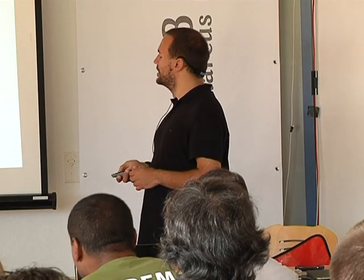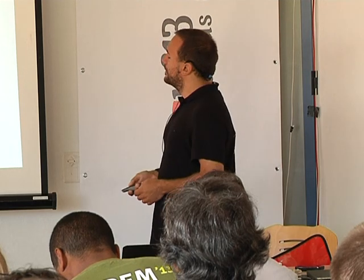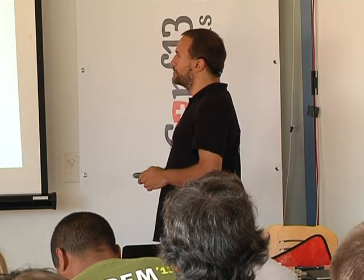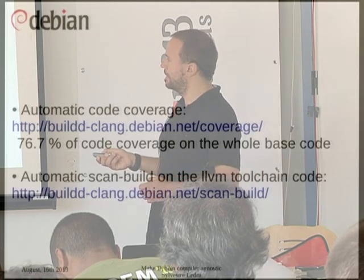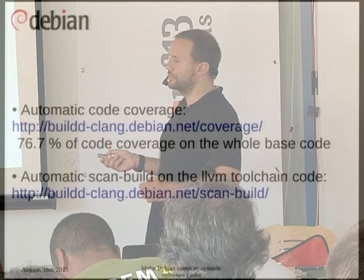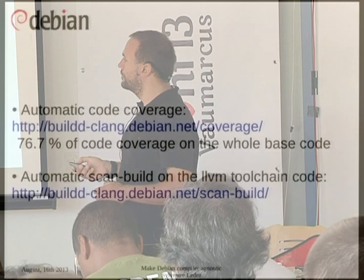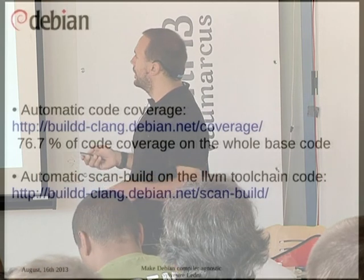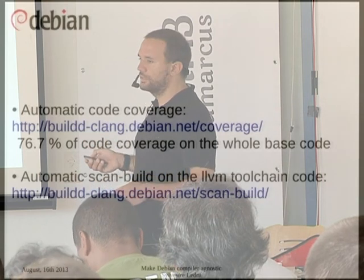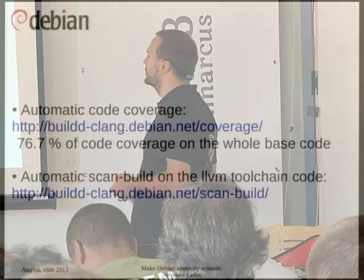We are supporting the latest Debian stable release and unstable, and the latest three Ubuntu releases. We are using Jenkins with Jenkins Debian Glue, which is a very nice project — I recommend you use it. We use exactly the same Debian directory as the one in the packages, so we haven't forked anything and everything is in the open. We also publish automatic code coverage of the whole project — 76% for the whole LLVM toolchain, which is a very good number, and many people in the LLVM community use it to improve their tests.